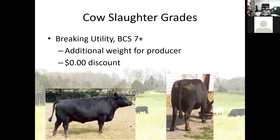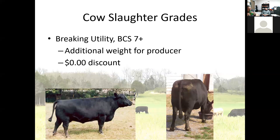Looking at USDA reports, we typically have three grades: breaking, boning, and lean. Breaking utility would be any cow with a body condition score of seven or higher — essentially, they're fat. You can see where they're very rounded in the pictures, with pones of fat on them. Some people like their cattle in that condition, but that's actually over-conditioned — not where we really want them during breeding season or calving season.